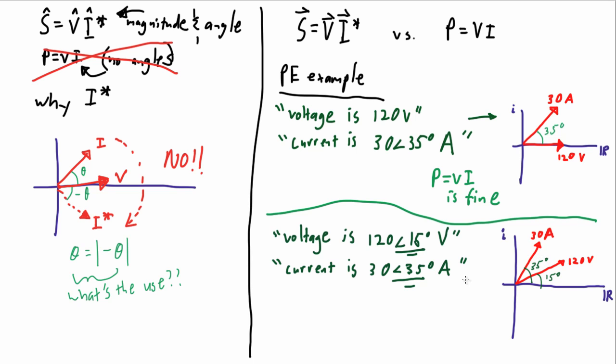Instead, what you would have to do is you would have to either do some set up work to get the voltage vector to zero, or you can use the conjugate formula, and you won't need to do any set up work at all. Which is the preferred, more efficient way of working through your PE style question.